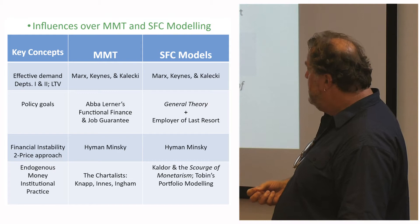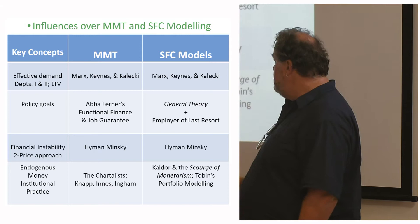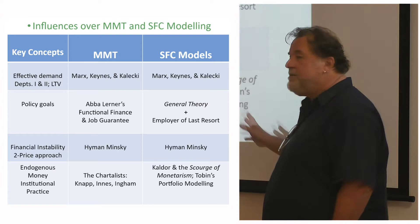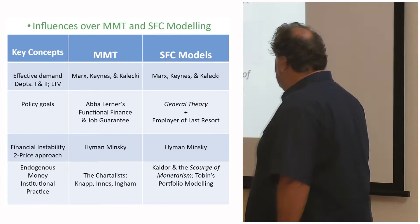With MMT, you have endogenous money and the emphasis on institutional practice. The influences there are the Chartalists — Knapp, Innes, and Ingham. For stock-flow consistent models, the work of Nicholas Kaldor in the UK was important. He wrote a brilliant essay, 'The Scourge of Monetarism,' attacking Milton Friedman's monetarist prognostications. Another big influence is James Tobin, an American Keynesian.